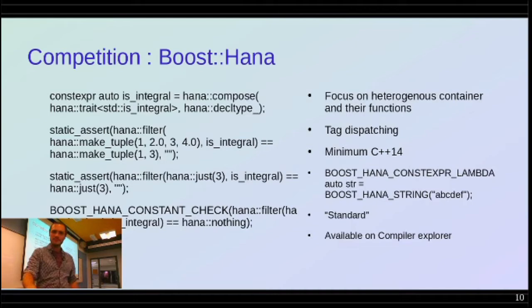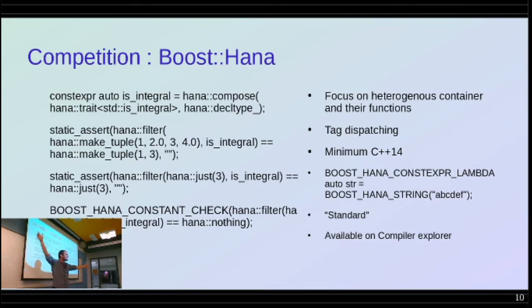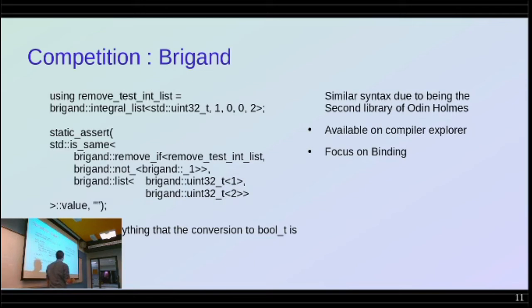Brigant — the second library. We'll do exactly the same thing. This is the same as we saw in Boost MPL where they create a predicate. But instead of returning a bool, it composes something that takes a trait — is_integral — this is the STD one but without any template parameters. We take that as a template template. Then use something that is a tag of decl_type to create a monstrosity of a type. It worked. Brigant is also available in Compiler Explorer.